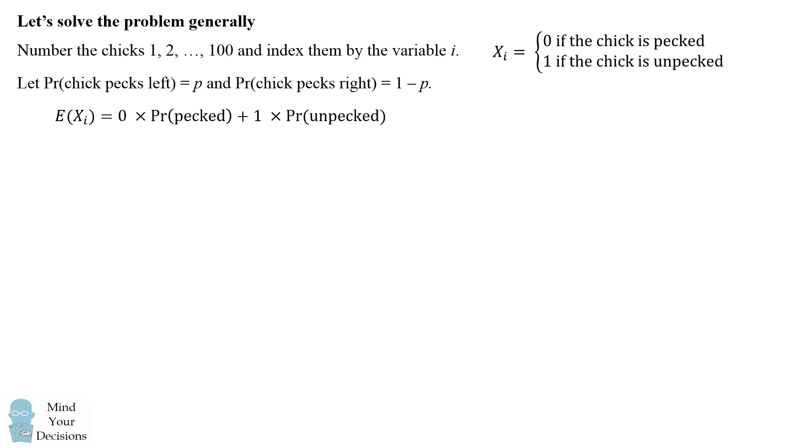We now compute the expected value of x sub i. By definition, this is equal to 0 times the probability a chick is pecked and 1 times the probability a chick is unpecked. This simplifies to be the probability a chick is unpecked.